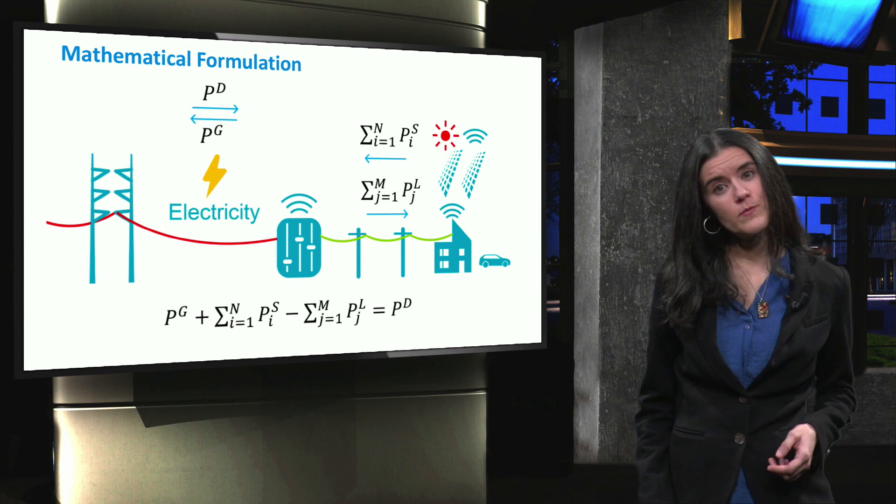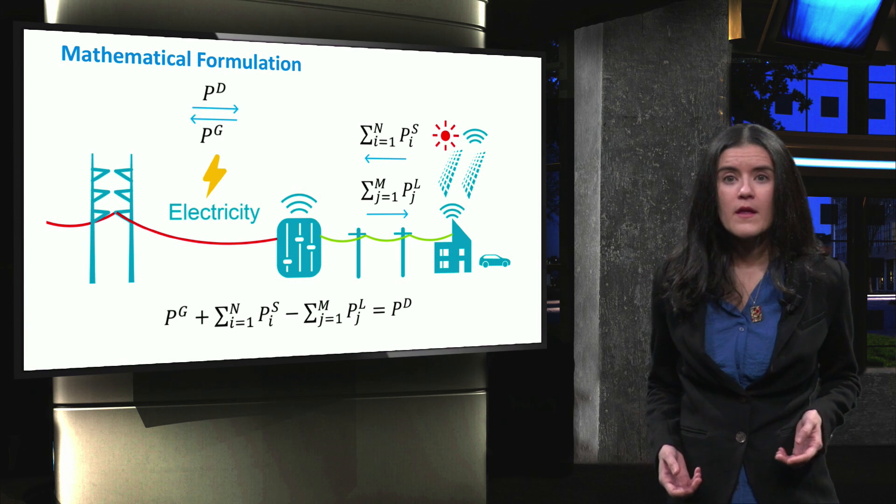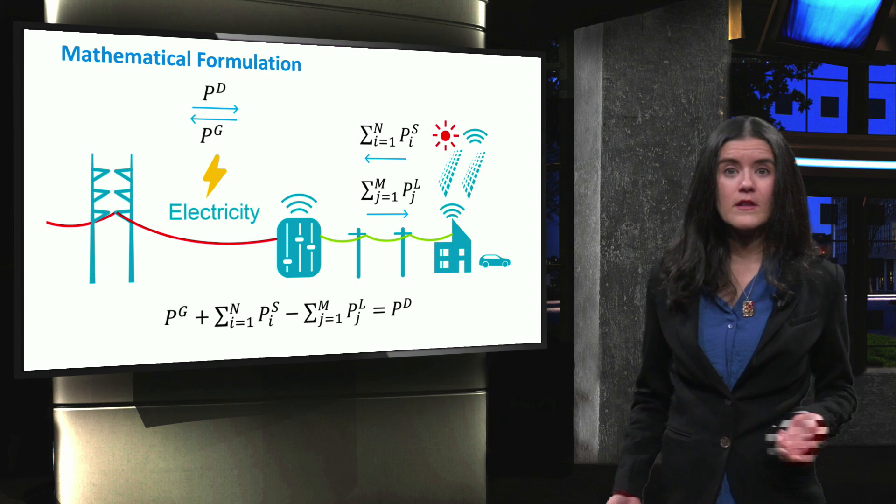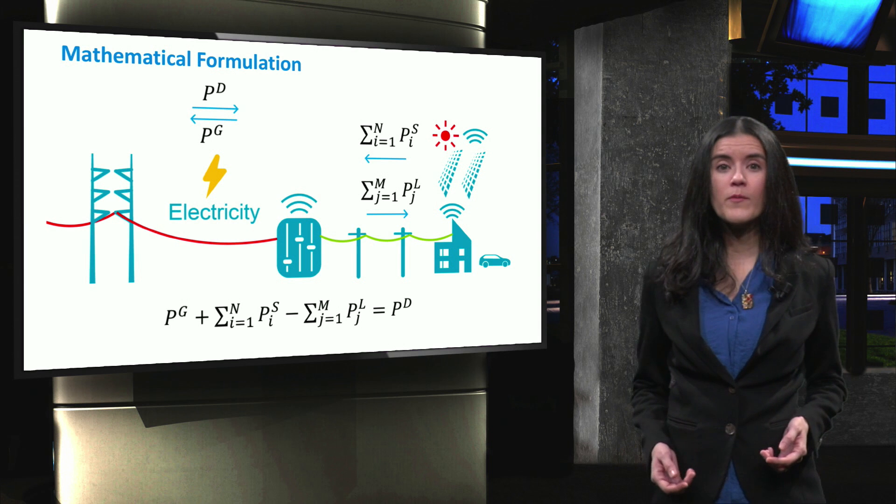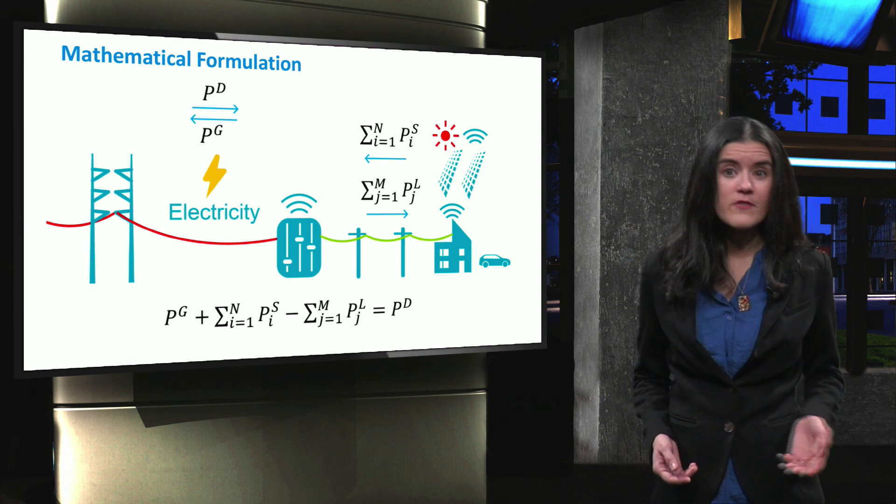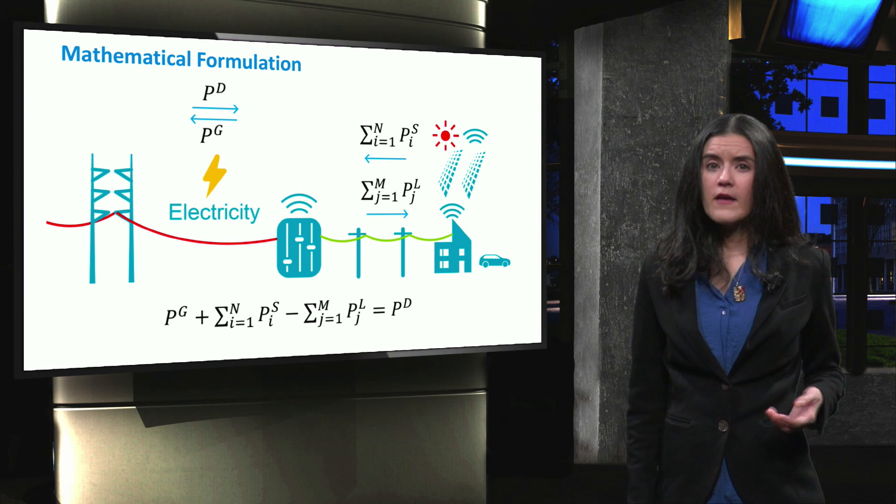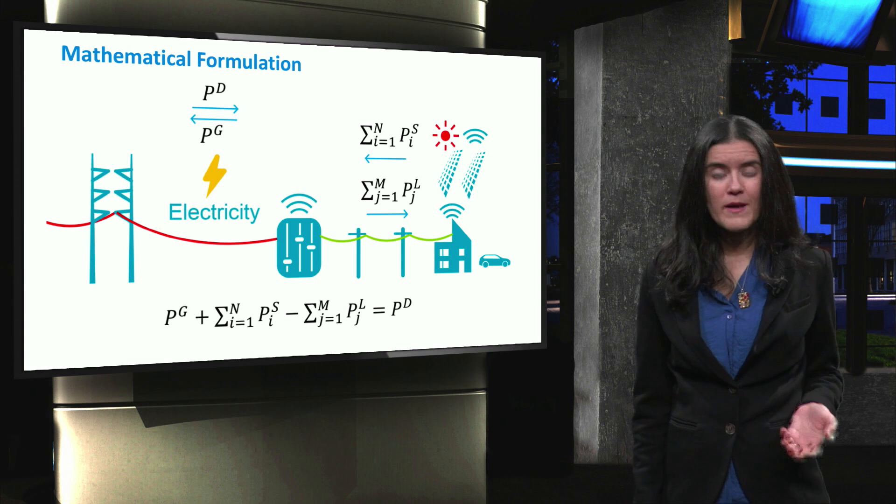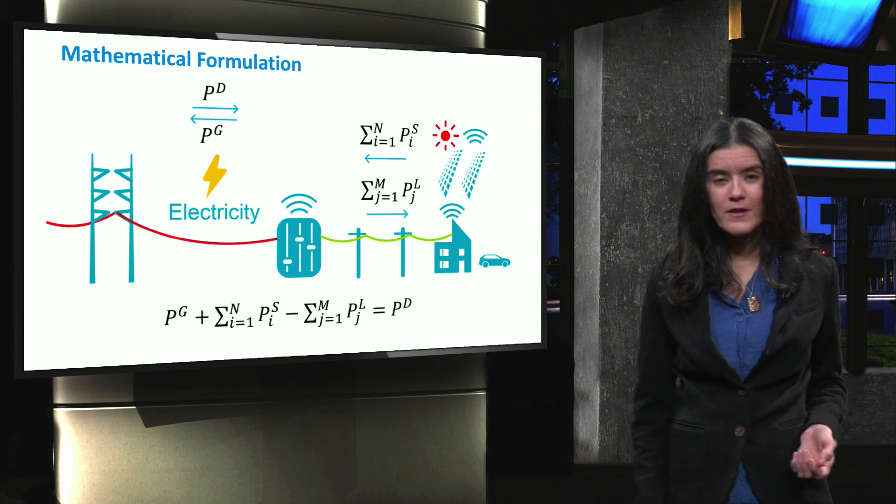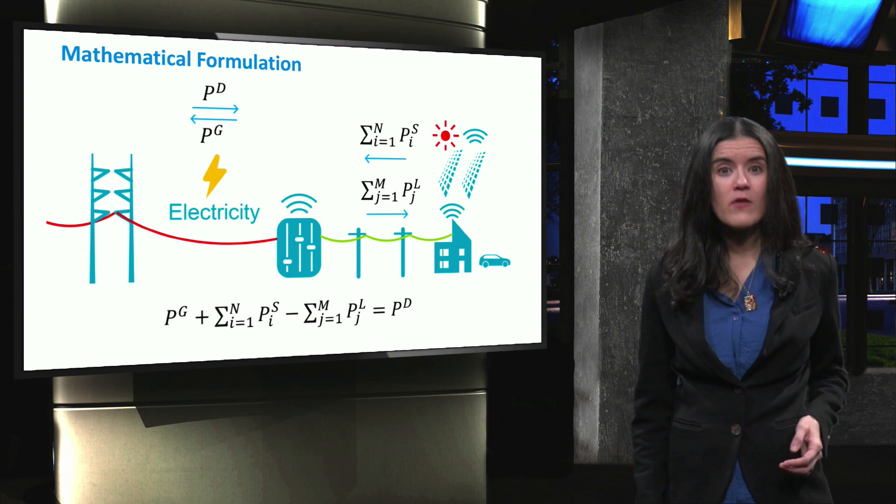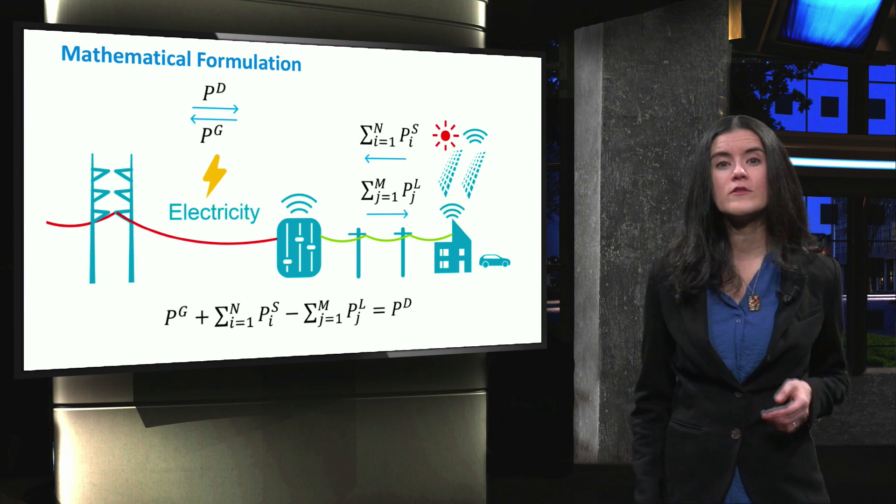In every optimization problem, there are constraints to which the objective function is subject to. In microgrids, examples of constraints are the technical limits of distributed generation sources like the minimum and maximum limits of operation, active and reactive power curves, and the start of times. If power change with the main grid wants to be avoided, another important constraint can be the active power balance of the microgrid, meaning that the total power generation within the microgrid at the point of common coupling is equal to the power consumption.